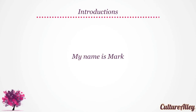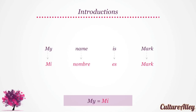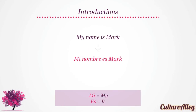Now let's look at how we will tell our name by taking an example. 'My name is Mark.' Translating it word by word, we see that 'my' translates to 'mi', 'name' is 'nombre', 'is' becomes 'es', and Mark stays as Mark. Hence, 'my name is Mark' translates to 'Mi nombre es Mark'.